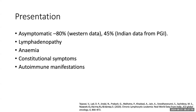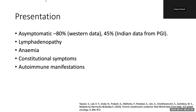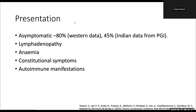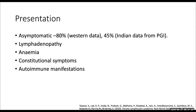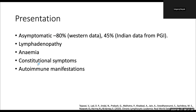In western data, around 80 percent of patients are asymptomatic at presentation. In Indian data, almost half present incidentally — evaluated for something else and eventually diagnosed with CLL. Presentations include lymphadenopathy, anemia, constitutional symptoms, and autoimmune manifestations.